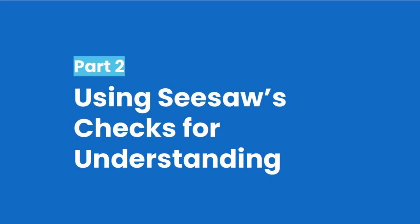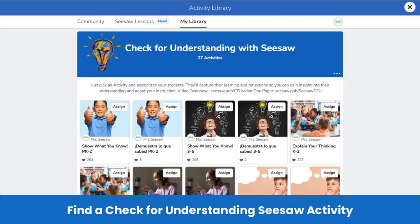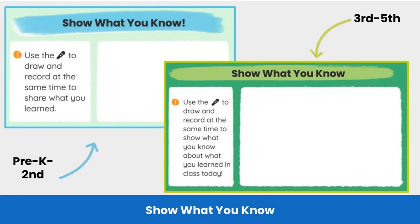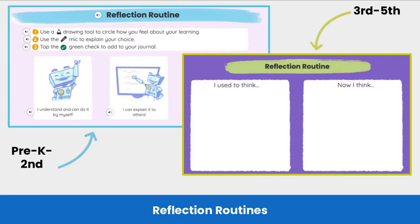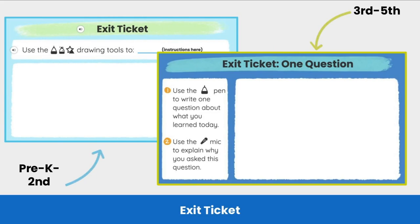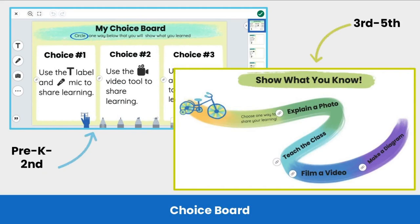Welcome back. We know how tricky it can be to find the perfect activity for your students to show their learning, so this next section is going to cover resources that Seesaw has created to save you time and energy. Seesaw has created ready-to-go check for understanding activities in both English and Spanish to assist you in gaining valuable insight into what your students are learning. In this collection you will find show what you know, explain your thinking, reflection routine, exit ticket, and choice board activities for both pre-K to second grade and third through fifth grade.